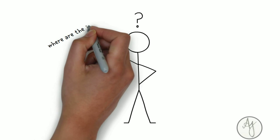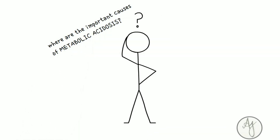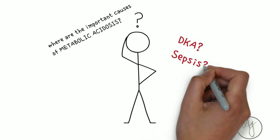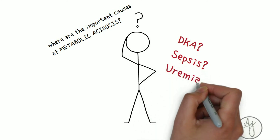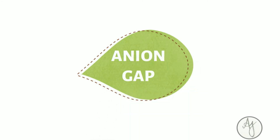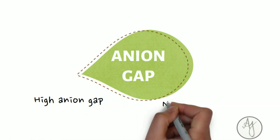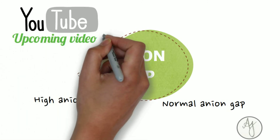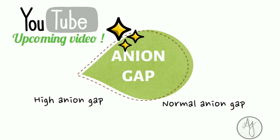That brings us to the end of today's video. Many of you would have noticed I hadn't mentioned the complete list of causes of metabolic acidosis — especially important ones like diabetic ketoacidosis, sepsis, and uremia. That topic requires understanding anion gap, because under metabolic acidosis there is an extensive list of high anion gap and normal anion gap metabolic acidosis. In the next video, I will discuss anion gap and its types, which is also an essential part of ABG.